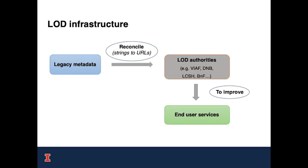As we know, linked open data infrastructure relies on well-designed ontologies, frameworks, and identifier best practices. But the finest infrastructure won't work if we cannot reconcile our metadata to link to appropriate linked open data authorities, and if we cannot connect these authorities one to another in ways that improve user services.